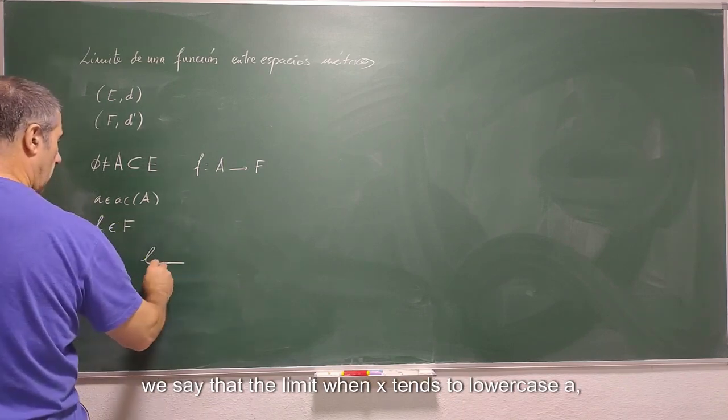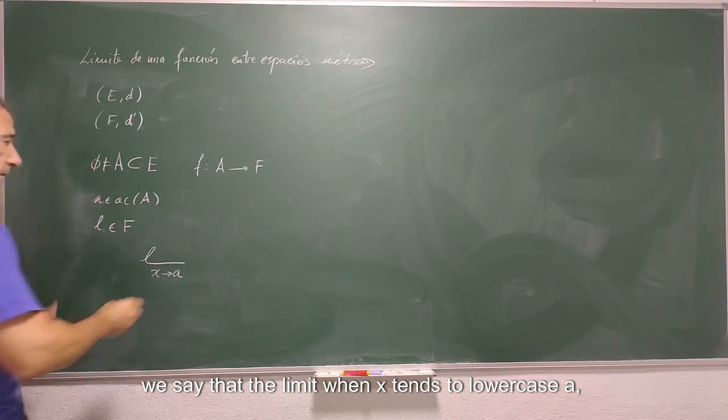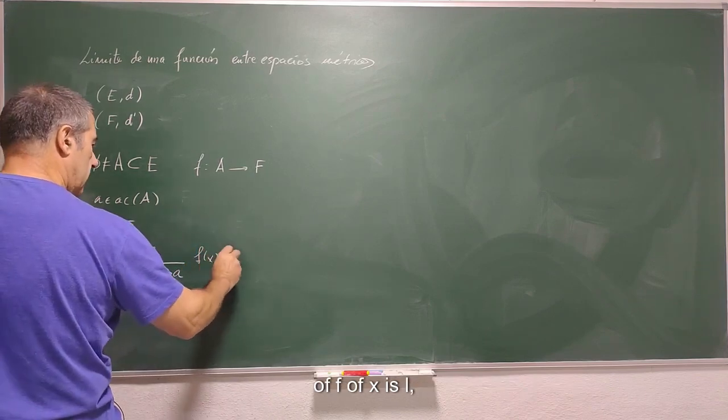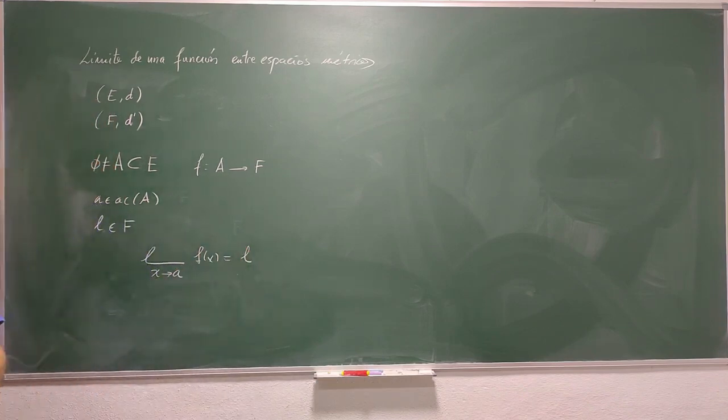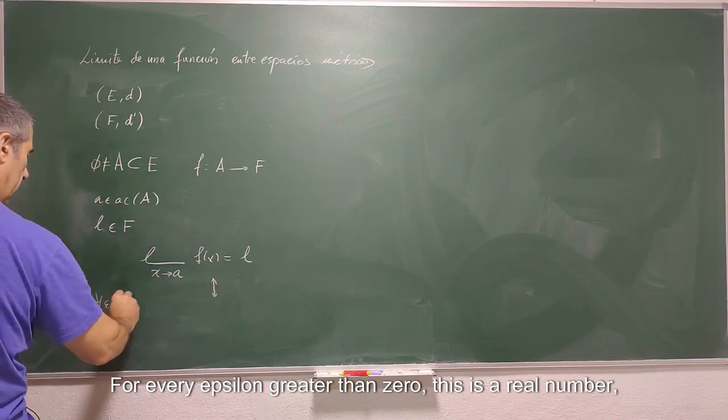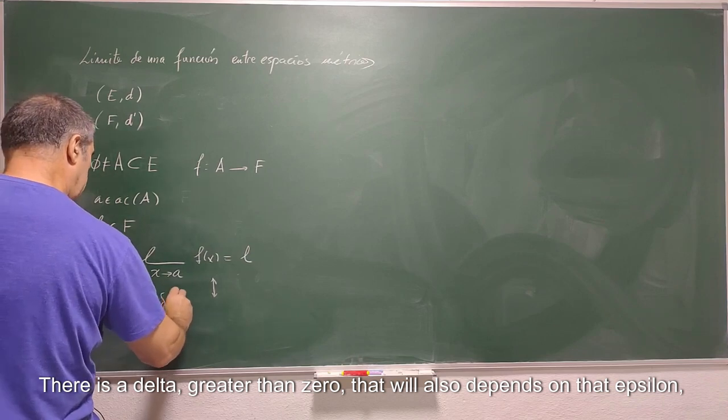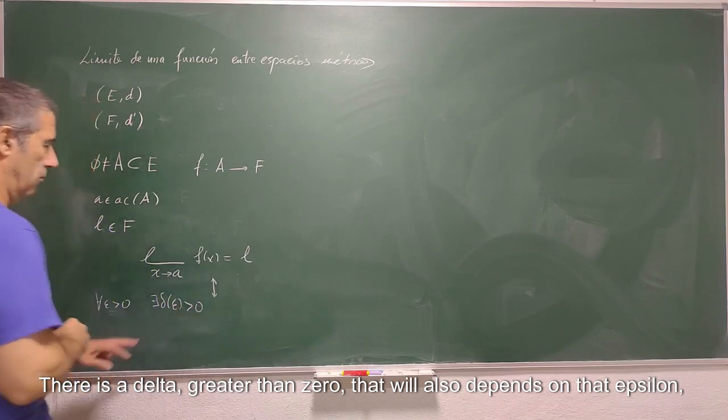We say that the limit when x tends to lowercase a of f of x is L if and only if for every epsilon greater than 0, this is a real number, there is a delta greater than 0 that will also depend on that epsilon.